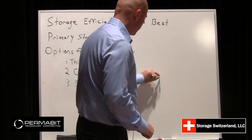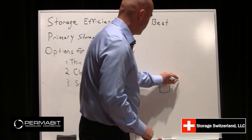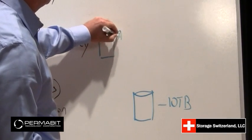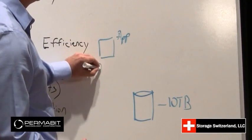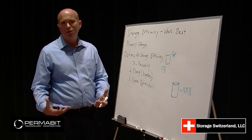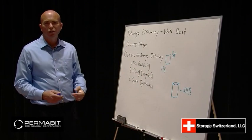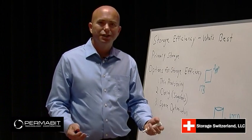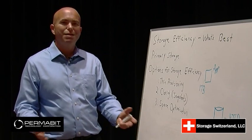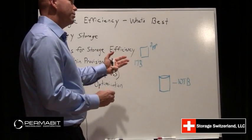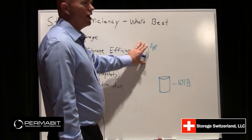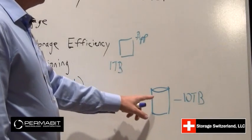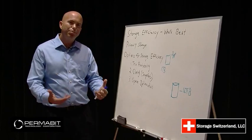For example, let's say we have a storage system that has 10 terabytes of disk capacity and we have an application that needs one terabyte. As any storage manager will tell you, when a user requests one terabyte of storage, what they're really saying is that within three years that's what they'll need. Day one, they don't need a terabyte — they probably need at best double digit gigabytes, maybe 100 or 200 gigabytes. So instead of assigning a whole terabyte and waiting three years for the application to use it, we want storage to be allocated as the user needs it. That process is called thin provisioning.